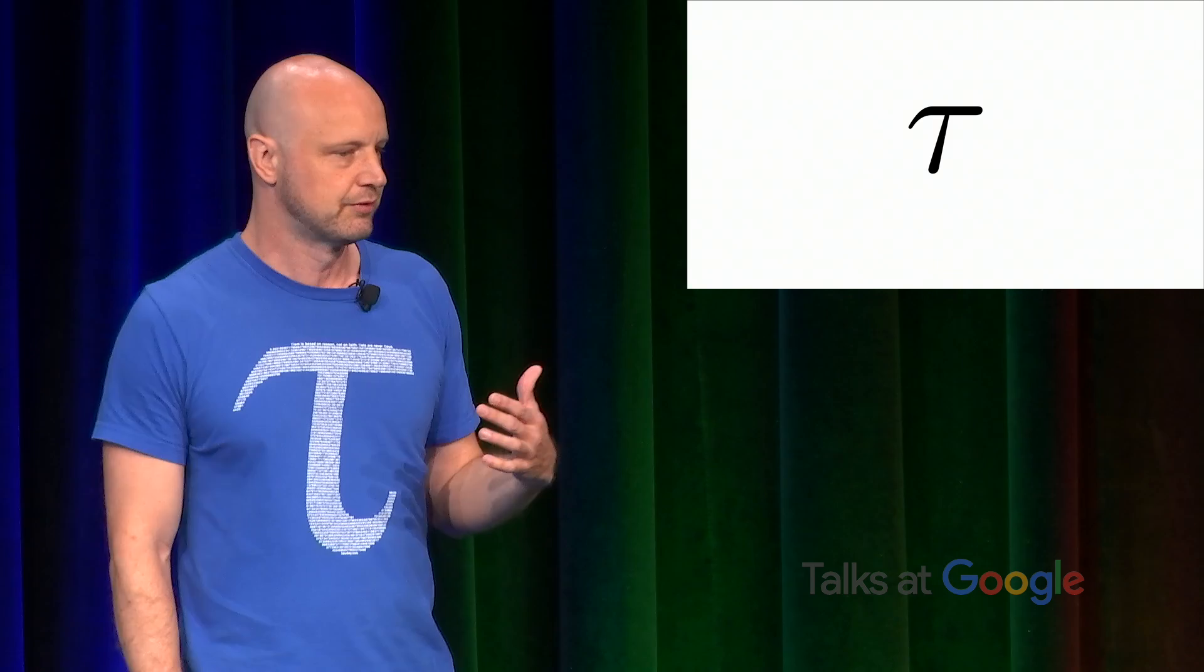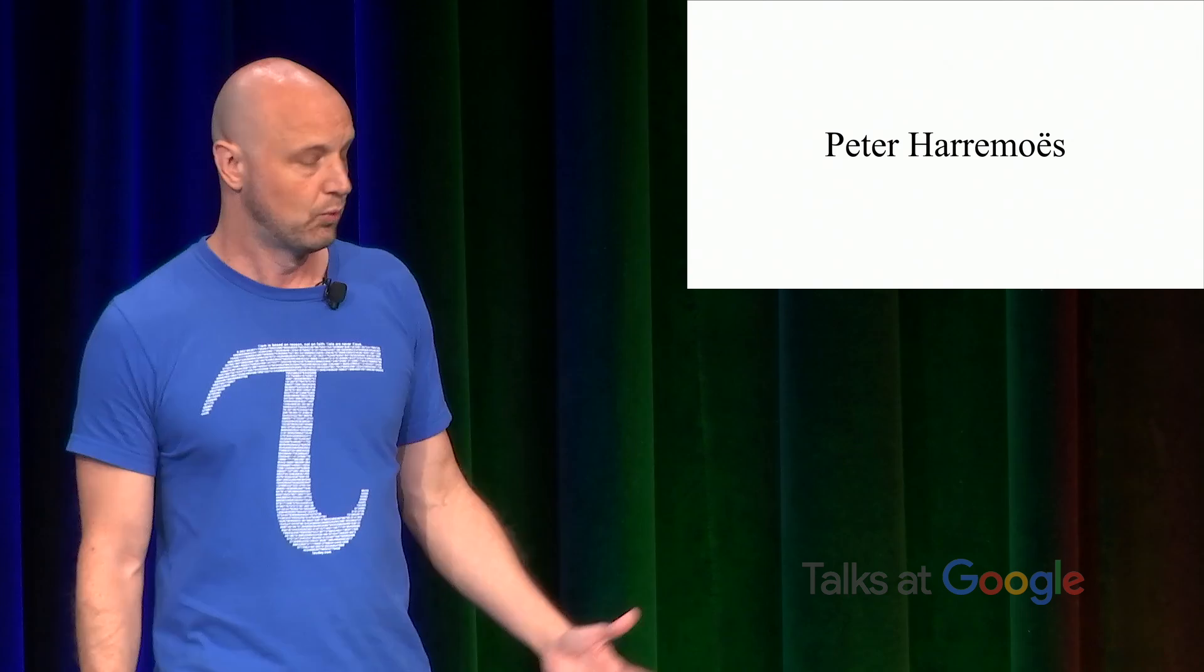One is a physicist in Europe named Peter Harremoes, and he reached out to Bob Palais around the same time that I told Bob that I was planning to publish the Tau Manifesto, proposing that we use Tau for C over R. It was completely independent of me. And I later found out that Joseph Lindenberg wrote a math essay in 1990 or so on mathematical constants. And it was obvious to him that C over R was the right circle constant, but he needed a symbol for it.